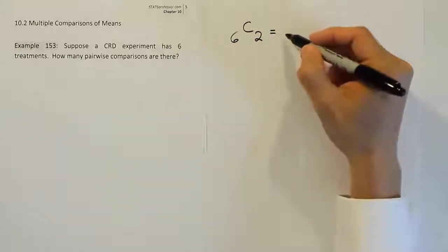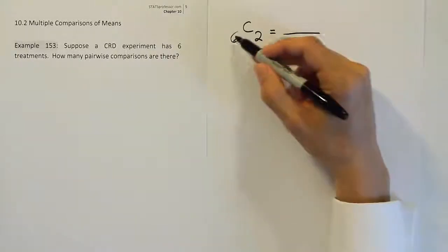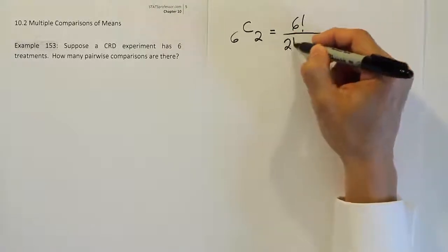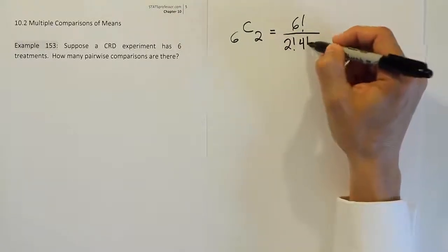But if you're working out combinations what you would do is simply say this first number factorial over the second number factorial and then the difference between the two factorial.